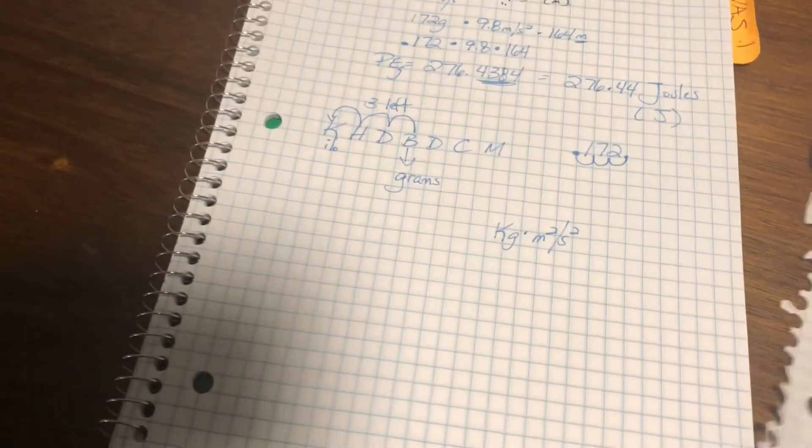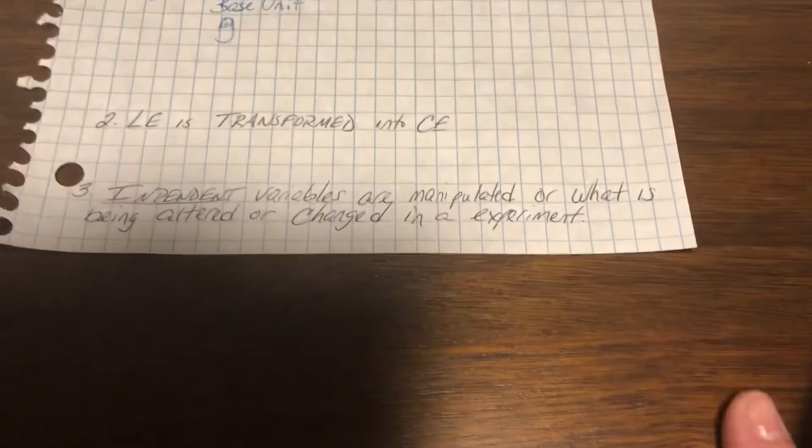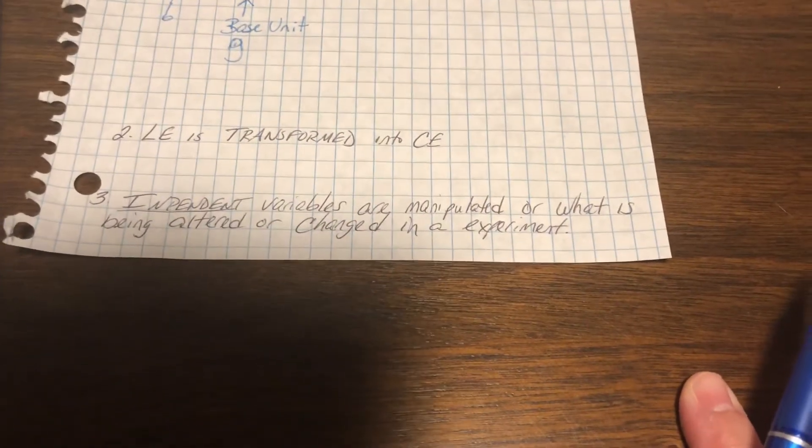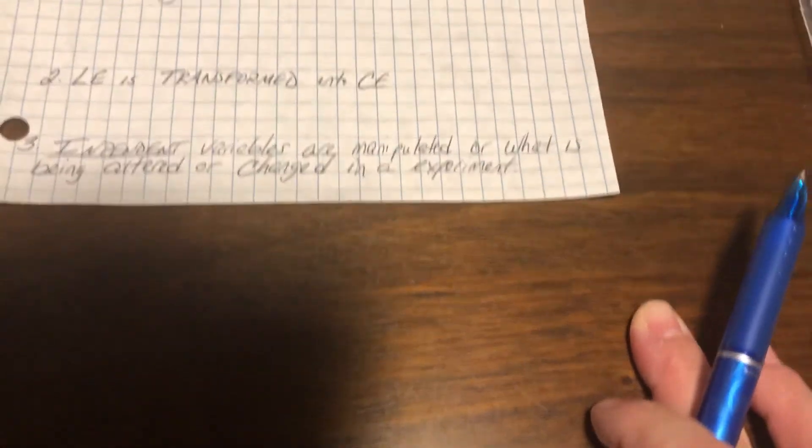Now for the last question, for number two and three real quick. Light energy is transformed into chemical energy. Light energy is a type of kinetic. Chemical is a type of potential. So when we go from kinetic to potential or potential to kinetic, we are transforming.